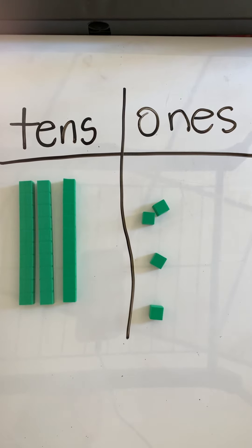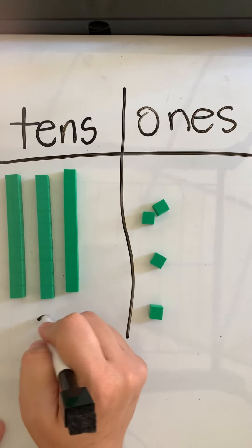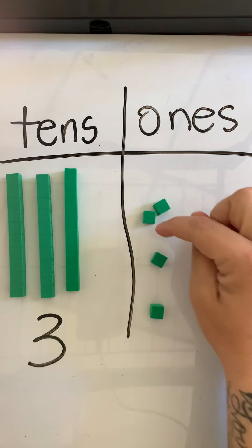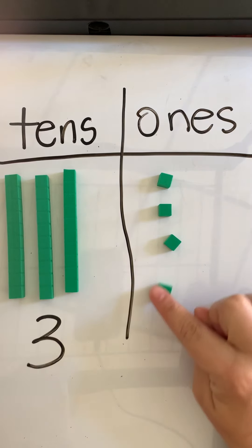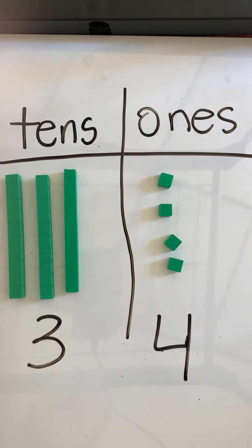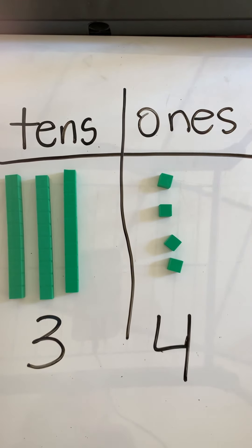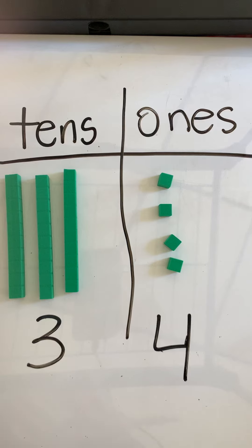First we're going to take a look at the number 34, which is 1, 2, 3 tens and 1, 2, 3, 4 ones. Now when we're looking at 10 more or 10 less, the ones place is always going to stay the same. The only thing we will change is the tens place.